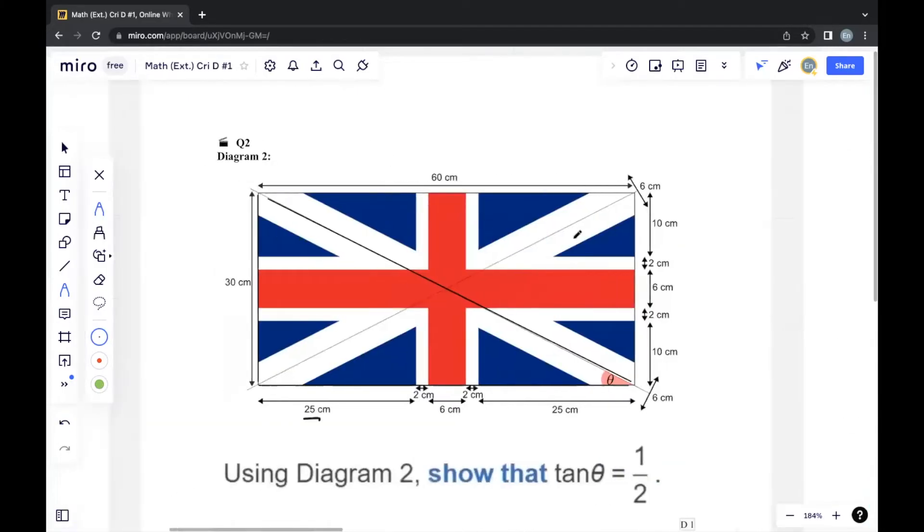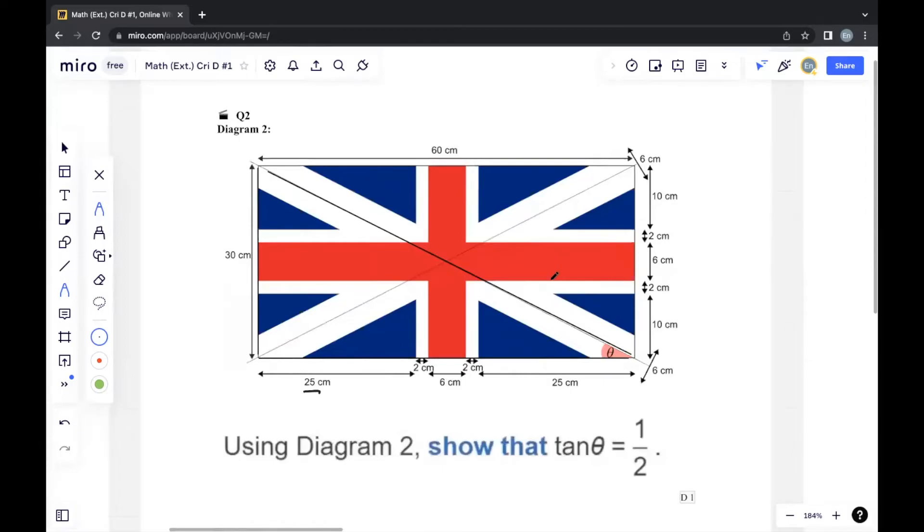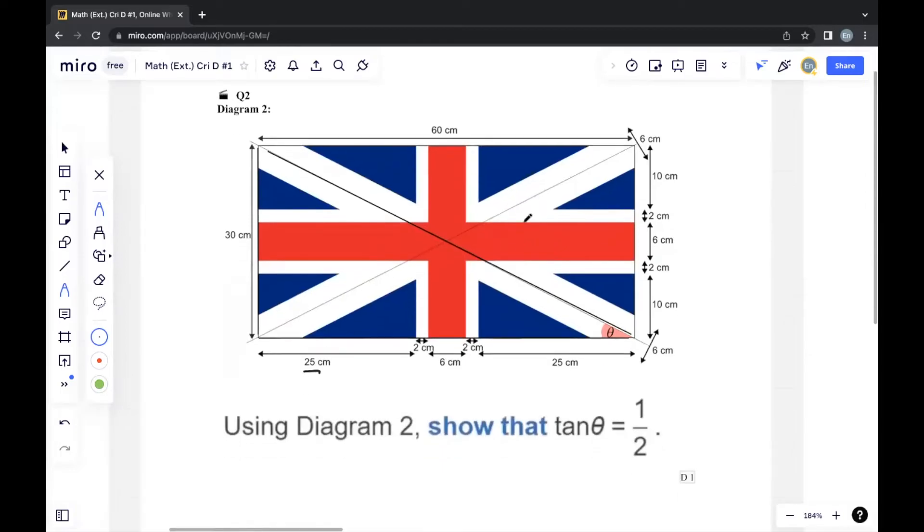Now on to question 2. They show us diagram 2. The question says: using diagram 2, show that tan θ is 1 over 2. First, let's identify where theta is—they've already labeled it for us. We need to identify a right-angled triangle that includes theta, because they're using tan. We can already see one in use here.